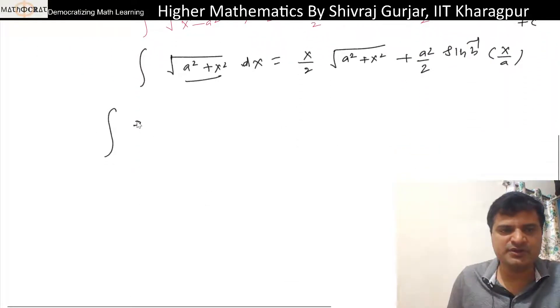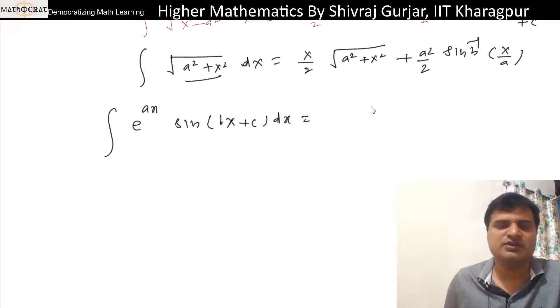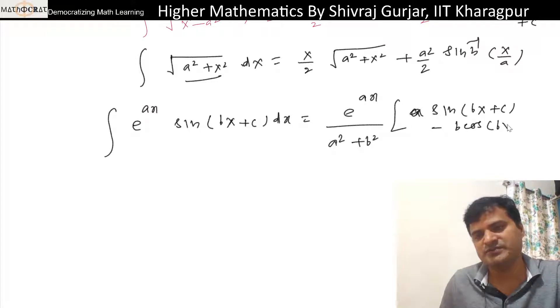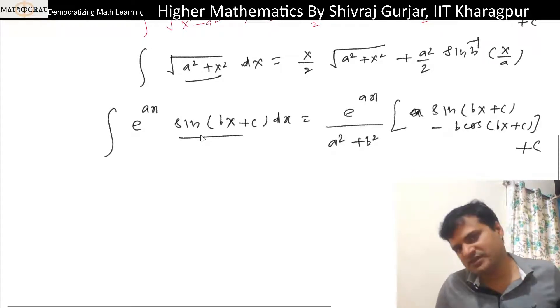This is important: integral of e raised to power ax times sin bx plus C dx. This comes out to be e raised to power ax divided by a square plus b square times a sine bx plus C minus b cos bx plus C, plus constant of integration.